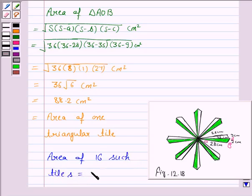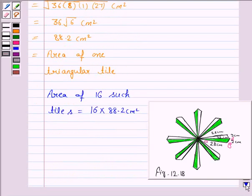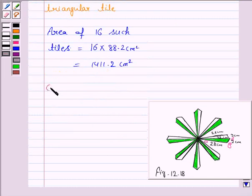Now, the area of 16 such tiles is equal to number of tiles into the area of one tile. So, this is equal to 16 × 88.2 = 1411.2 cm².